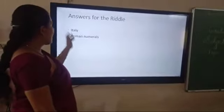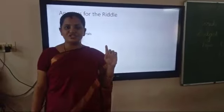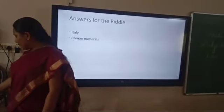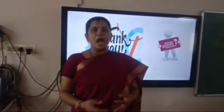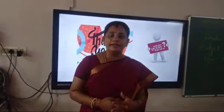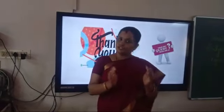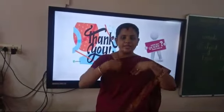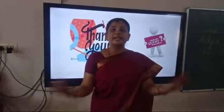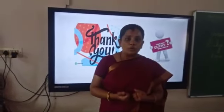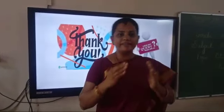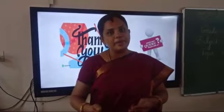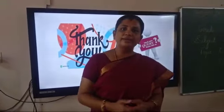The answer to the riddle, children: the first is a country's name literally, and the second involves Roman numerals. Today's lesson was about citizens and citizenship. Citizen is you and me — we are all citizens belonging to our country, holding citizenship and the rights to live in a country. In our next classes we will be moving on further. Thank you, children.